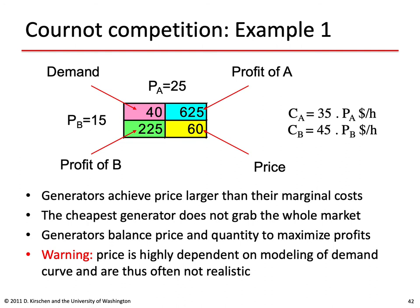At the Cournot Nash equilibrium, the two generators achieve a price of $60, which is larger than either of their marginal costs. Notably, the cheapest generator A does not grab the whole market — it leaves a share to B. The generators balance price and quantity to maximize their profit. However, Cournot model prices are highly dependent on how demand is modeled, so results are often not very realistic.